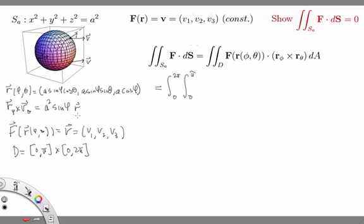So I'm going to get v1 times a cubed sine squared phi times cosine theta, and then I get v2 times a cubed sine squared phi times sine theta,